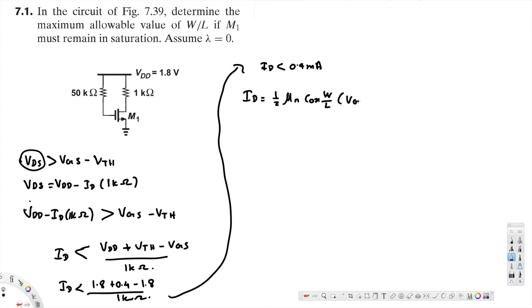Here our purpose is to find out the W over L. That's what the question is asking for. So if we rearrange this one in terms of W over L, the equation will become 2 ID